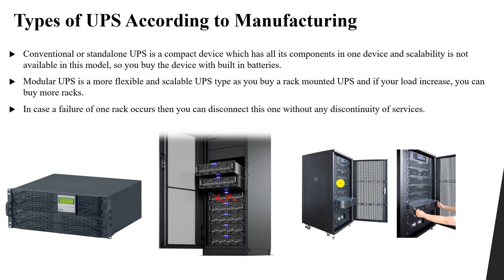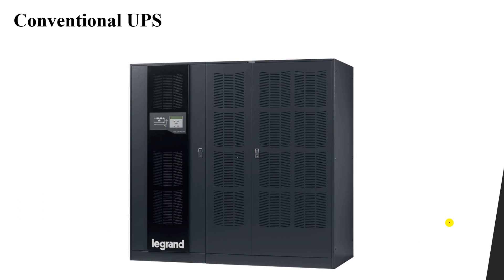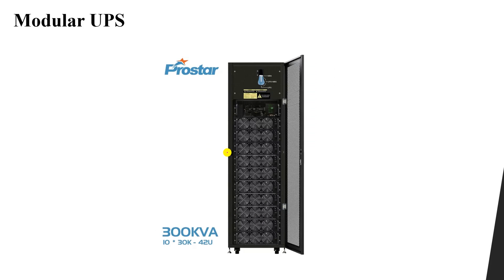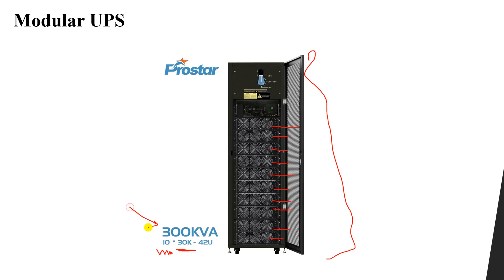As you can see, each rack contains one module that can be added or removed as needed. Here you can also see an image of the conventional UPS with all components inside it. Looking at an image of a modular UPS, we can count 10 racks or 10 modules. Each module is rated at 30 kilovolt ampere, giving a total system rating of 100 kilovolt ampere. In this lesson, we covered the conventional UPS and the modular UPS and the key differences between them.